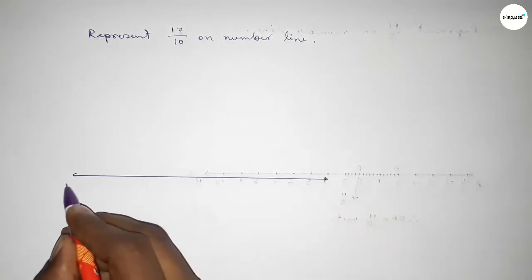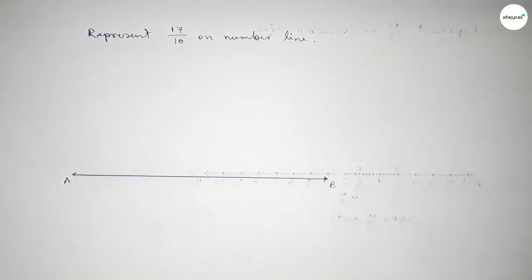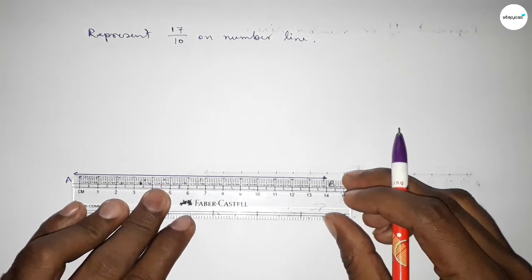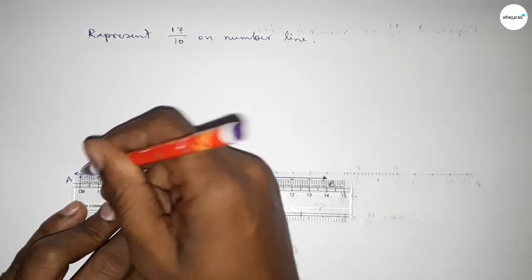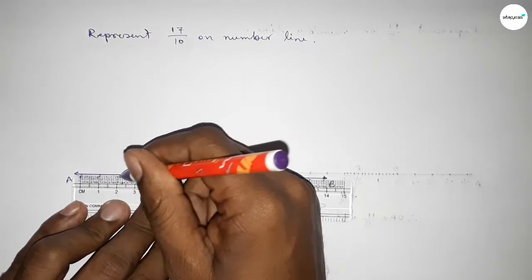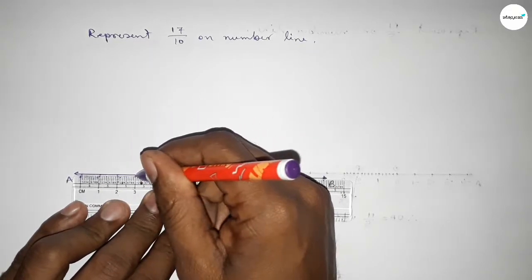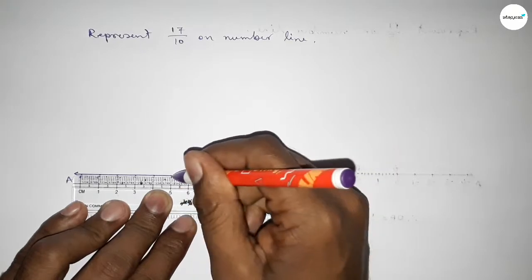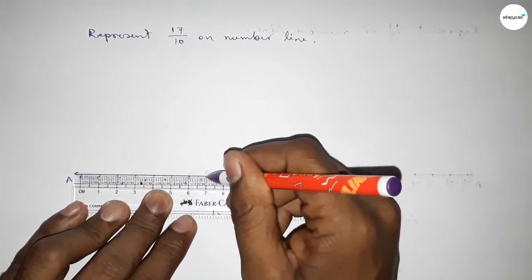Drawing a line and taking arrow marks on both sides - this is line AB. Next, we have to mark the numbers on the line by using a scale.